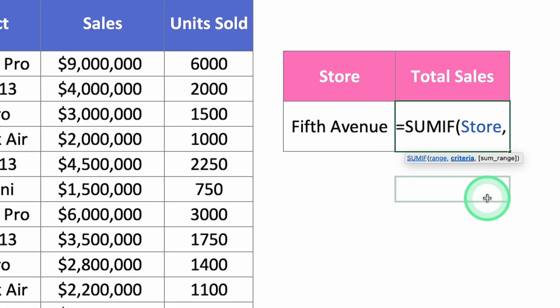Next, it'll ask you for the criteria — the condition that needs to be met. In this case, you're only interested in the 5th Avenue store, so select the cell with the store name.